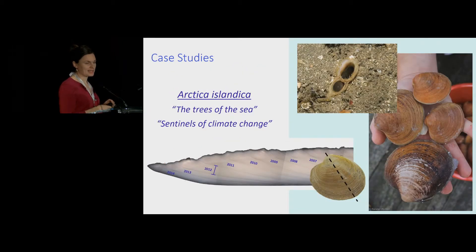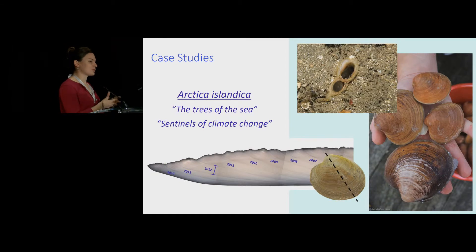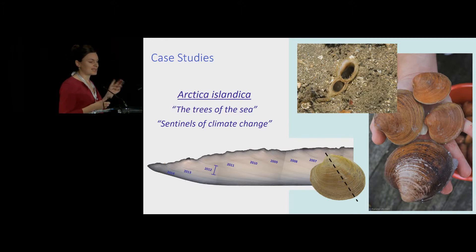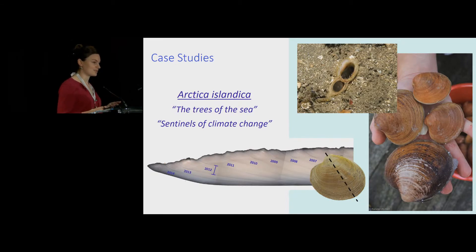Moving on to some case studies, I'm going to focus a lot on the marine bivalve Arctica Icelandica, also known as the mahogany clam or the ocean quahog. I focus on this species for two reasons: first, this is what I have the most experience with, and second, it's truly the premier sclerochronological archive in our field for several reasons. It's extremely long-lived — individuals of this species can live for many centuries, up to 500 years.